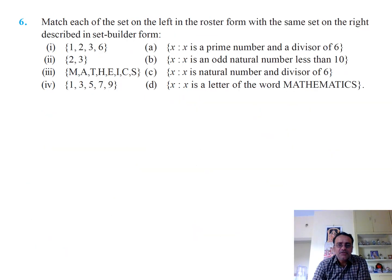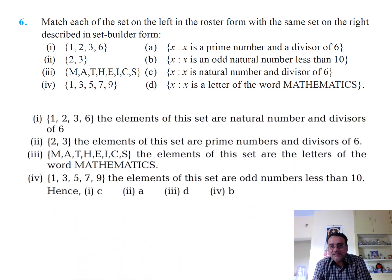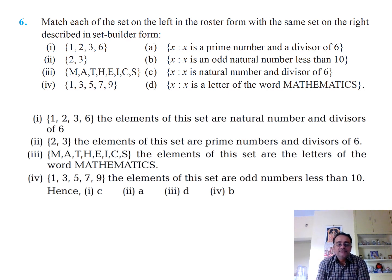Question 6: Match each set on the left in roster form with the same set on the right in set builder form. {1, 2, 3, 6} matches with 'x is a natural number and divisor of 6.' {2, 3} matches with 'x is a prime number and divisor of 6.' {M, A, T, H, E, I, C, S} matches with 'x is a letter of the word mathematics.' {1, 3, 5, 7, 9} matches with 'x is an odd natural number less than 10.' We have completed the first exercise. We will start the second session with a new exercise. Thank you.